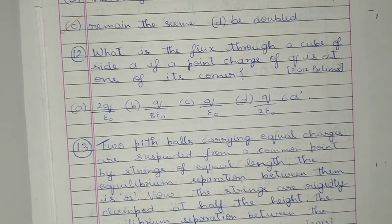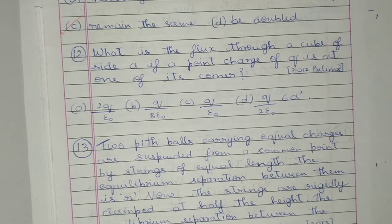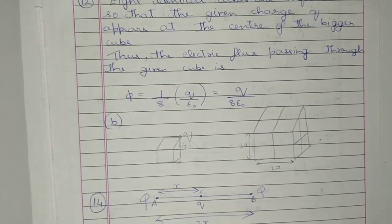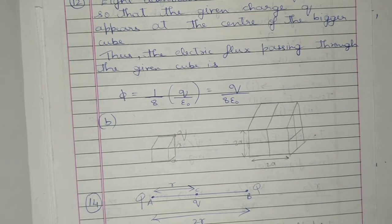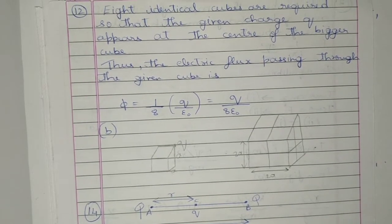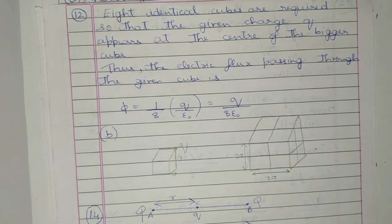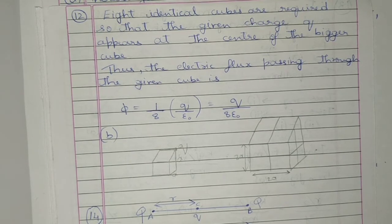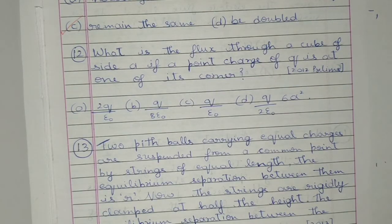Question 12: What is the flux through a cube of side a if a point charge Q is at one of its corners? Eight identical cubes are required so that the given charge Q appears at the center of the bigger cube. Thus the electric flux passing through the cube is (1/8)(Q/ε₀), which is equal to Q/(8ε₀). Which is option B.